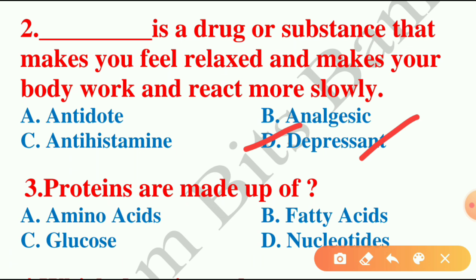Moving on to the next question: proteins are made up of — the options are amino acids, fatty acids, glucose, or nucleotides. The answer is option A — amino acids. Proteins are comprised of smaller building blocks called amino acids, and there are around 20 distinct amino acids present.